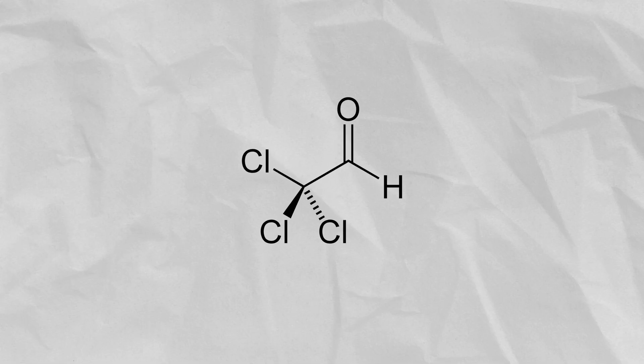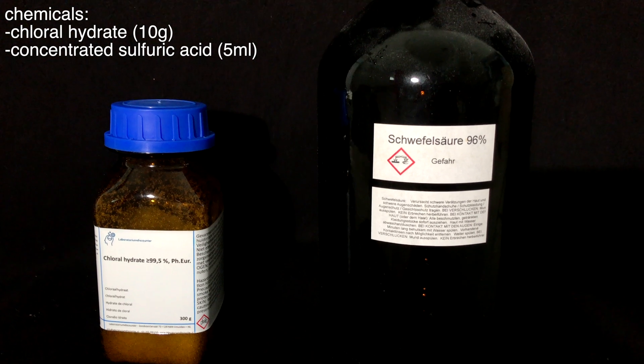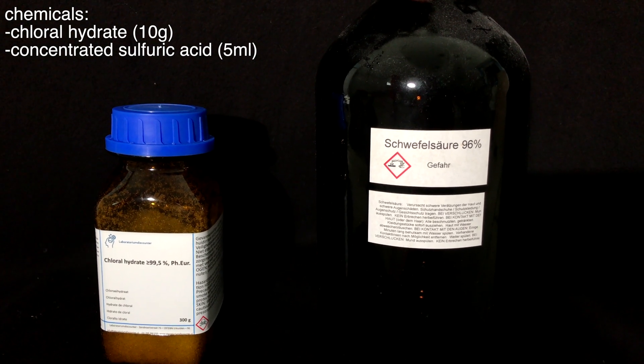This is chloral. Today I'm going to show you how to make it. For this project we only need two chemicals. The first one is chloral hydrate and the second one is a dehydrating agent, in our case concentrated sulfuric acid.